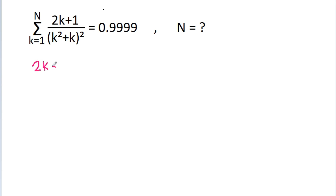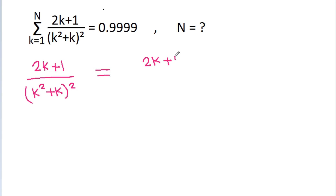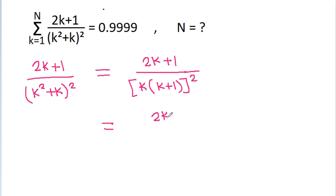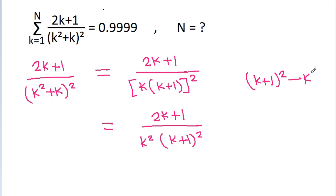We have (2k+1) divided by (k²+k)², which equals (2k+1) divided by — if we take k common, we get k(k+1) whole square. So the denominator becomes k² times (k+1)². If we subtract (k+1)² and k², that gives k² + 2k + 1 − k², and k² cancels, leaving 2k+1.